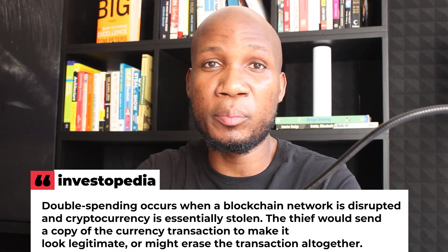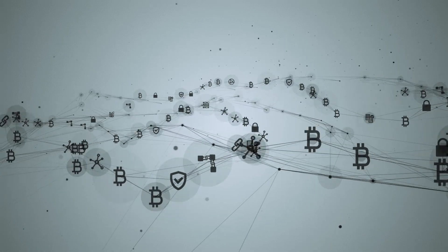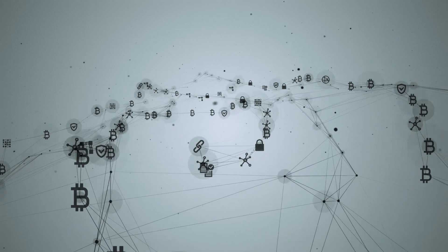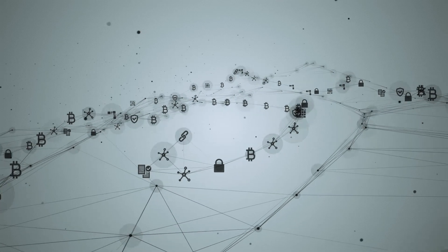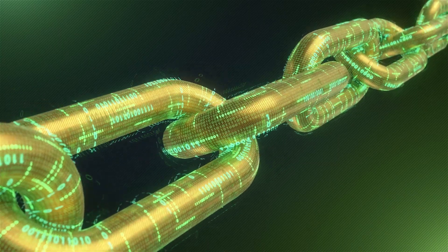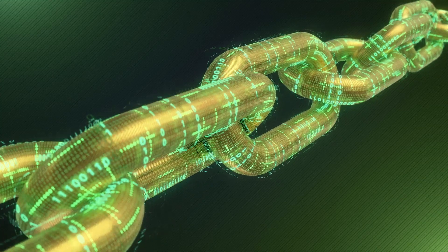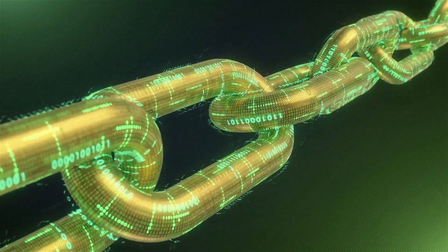If I send you Bitcoin, I'll need a device like a phone or computer, a Bitcoin wallet, and your Bitcoin wallet address. Once this transaction is sent, it will be broadcast to the Bitcoin network — the blockchain. A group of computers called miners or nodes will then verify this information, and once verified, you will receive your Bitcoin. Essentially, blockchain is a decentralized system of recording information such as Bitcoin transactions that makes it difficult for anyone to change, cheat, or hack.